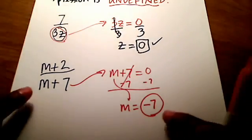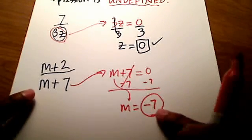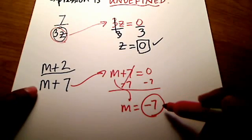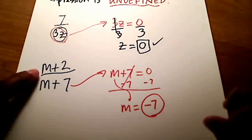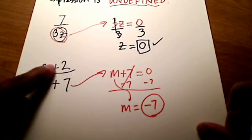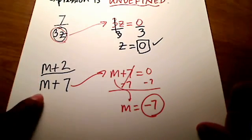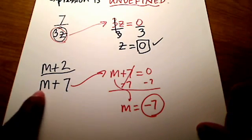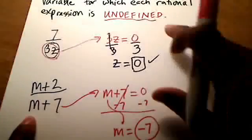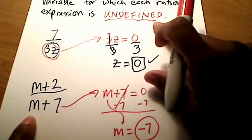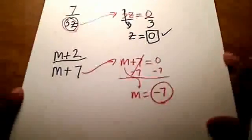So, look, if m is a negative 7, and I plugged it into this expression, well, let's see, negative 7 plus 2, that would make my numerator a negative 5. But do you see that it would turn my denominator into 0, and we cannot divide by 0? That's what would make my expression undefined.